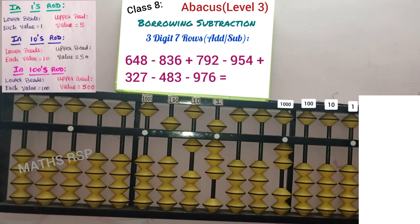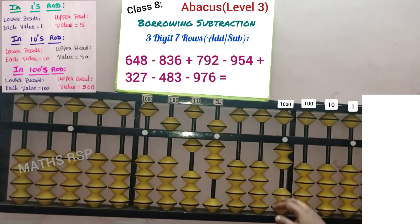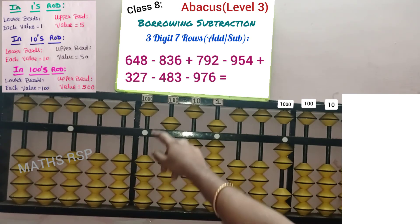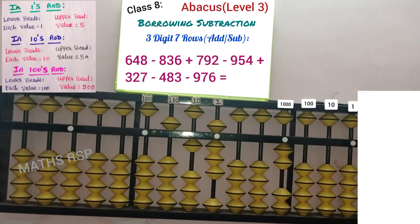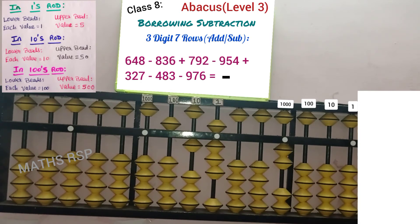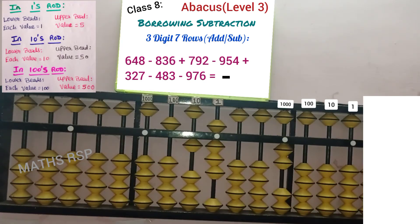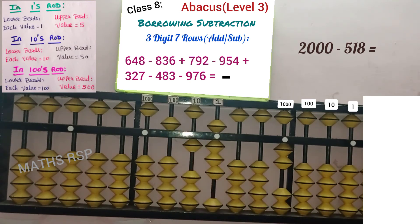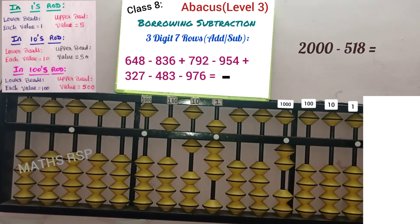Our sum is completed, but this is not our answer. Because in the right side part, 2 borrowed beads are available in the 1000 strad, which means we should return these beads — otherwise we will get a negative answer. In the 1000 strad 2 beads are available, and from the answer side no beads are available to remove, so we cannot return these borrowed beads. Therefore our answer must be a negative answer. Once our answer is negative, we should not take this value as our final answer. In the 1000 strad 2 beads — so we should take this as 2000. 2000 minus 518 is equal to our answer. Now I will explain the short way for finding the negative answer.